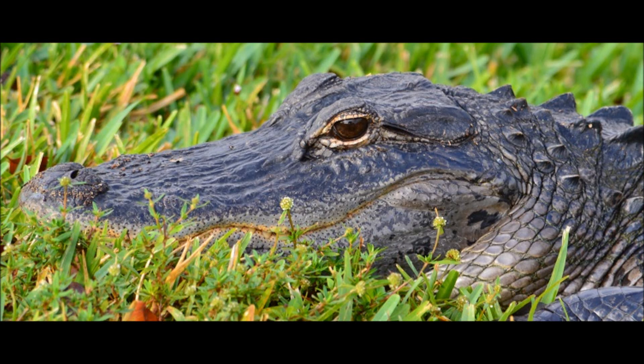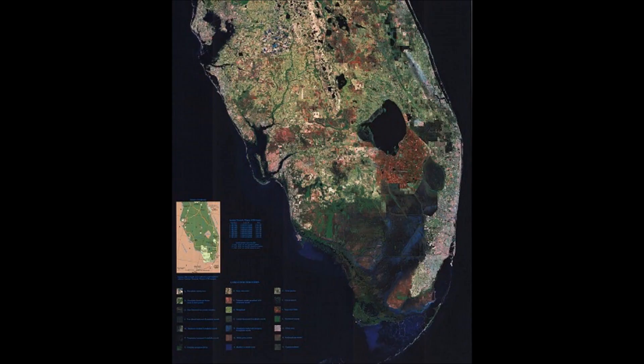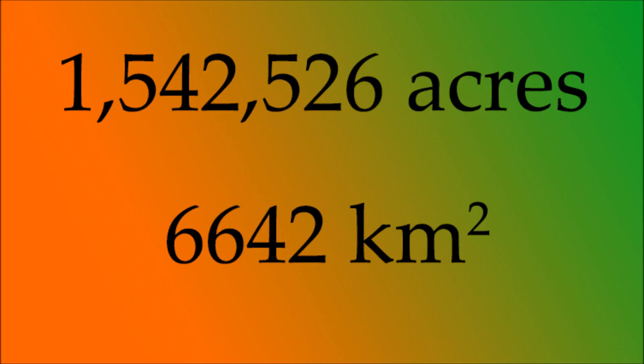Florida's River of Grass, the Everglades, Part 1: The Geography and Ecology of the Everglades. The Florida Everglades, also known as Florida's River of Grass, is located in southern Florida and covers an area of roughly 1,542,526 acres, or 6,642 square kilometers.